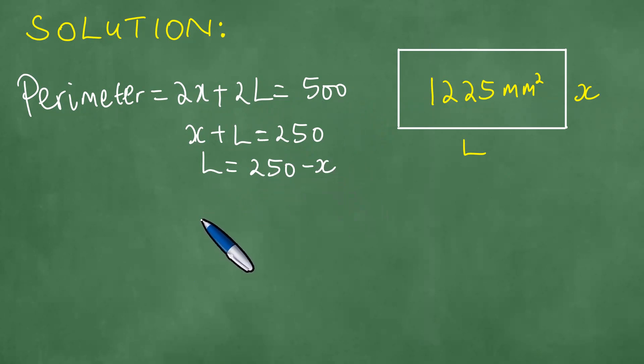So we have got the result here, but now we need to also examine the area. Because we know that the area, you can write it as length by the breadth, is 1225 square millimeters. Which means the length is 250 minus x multiplied by the breadth x.